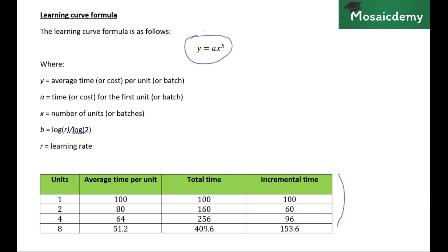The formula is y = ax raised to power b, where y is the average time or cost per unit or batch. The corresponding part of the table would be the column 'average time per unit' — that's why y. And a is the time or cost for the first unit or batch, which is generally given. Remember the table was in the form of a, ar, ar², ar³ — so that's the a we're talking about here as well.